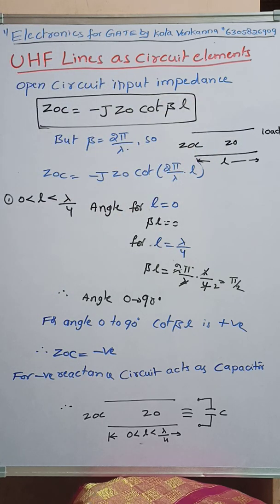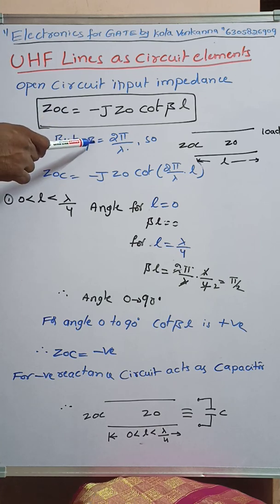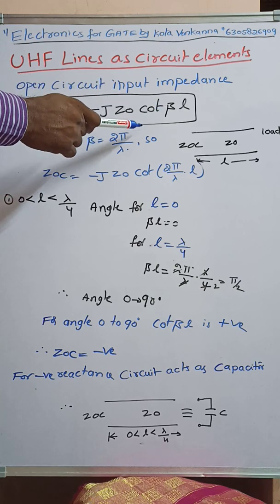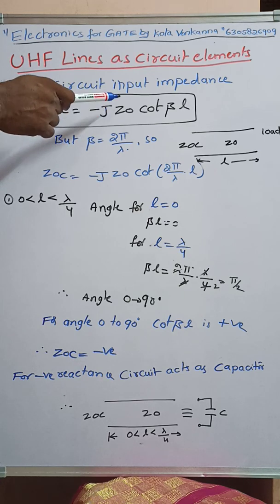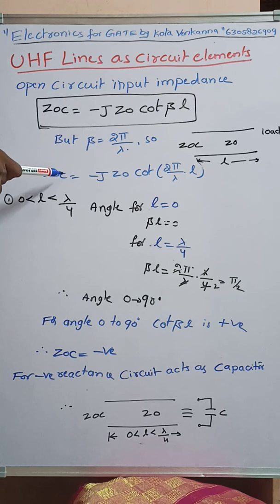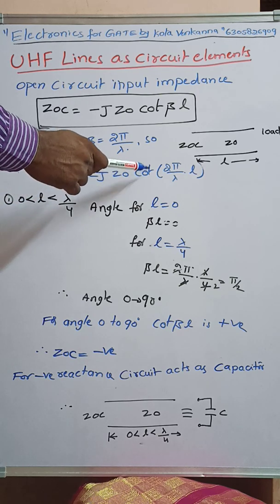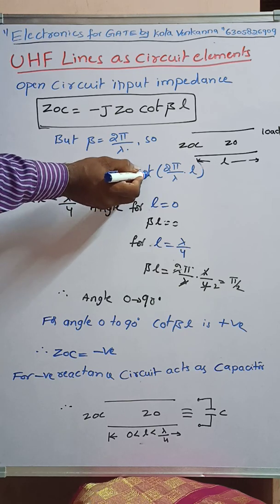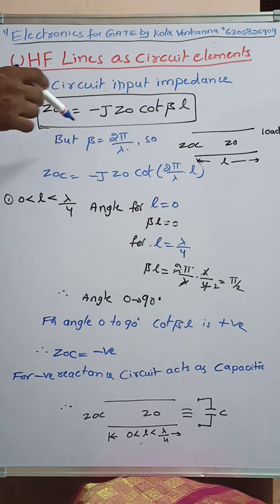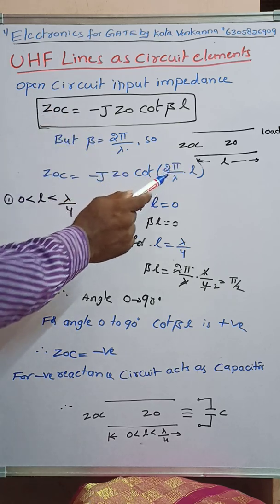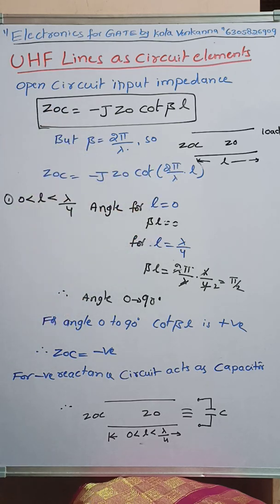Here β = 2π/λ. Substituting the beta value into the equation: Z_OC = -jZ₀ cot(βl) becomes Z_OC = -jZ₀ cot(2π/λ · L). Depending on the length L, the cot(βl) value changes.